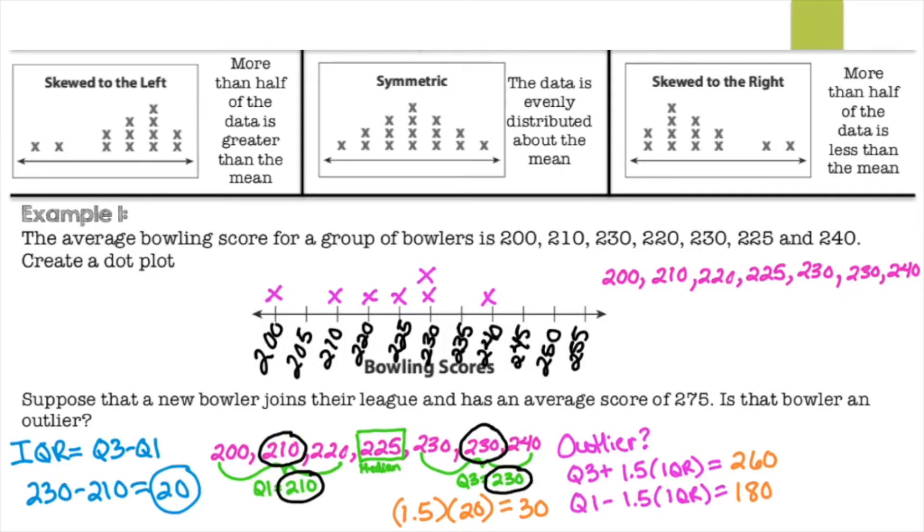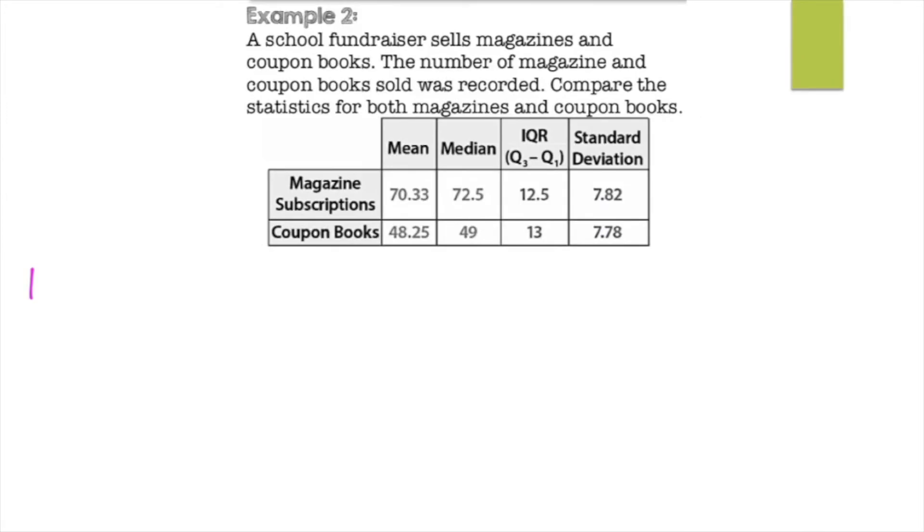So does 275 go outside those fences? So 260 would be, if we made a fence, would be right here, approximately. And 180 would probably be around right here. So it has to stay in between those two red lines. And does 275 go outside that line? It most certainly does, because it would be past that point of 260, it would be 275. So yes, 275 is an outlier, meaning the new bowler would skew the data.